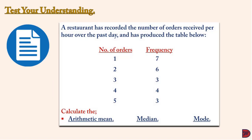Let's test our understanding. A restaurant has recorded the number of orders received per hour over the past day. The number of hours that had only one order was seven, two orders was six, three orders were three hours, four orders was four hours, and five orders was three hours. We are now supposed to calculate the arithmetic mean, the median, and the mode.